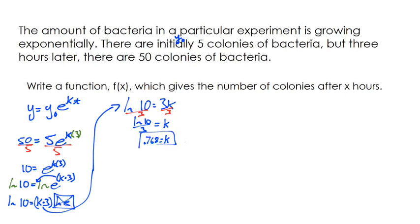We did all this work to figure out what k is, but keep in mind, k is not our answer. This one asks us to write a function. So let's come back to what we know. We know if our equation is going to take this structure, we have y naught is 5, we have e, but now we have that our k value is this .768.